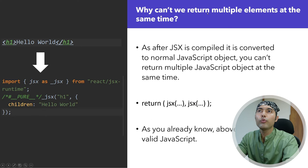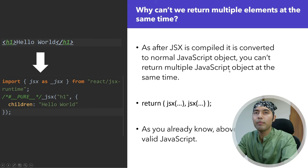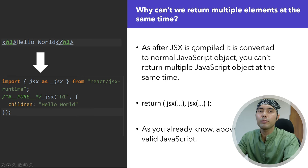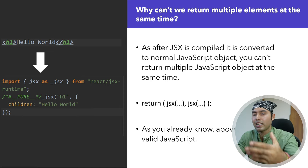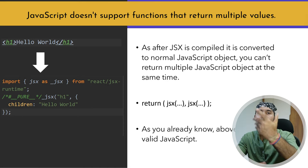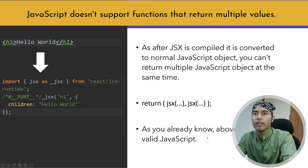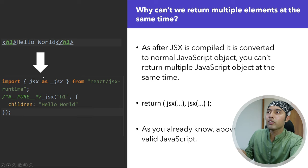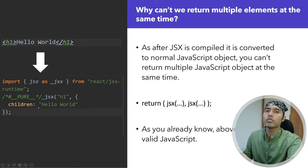Why can't we return multiple elements at the same time? The reason is, when you return JSX, you can't return multiple objects at the same time. You can try it in normal JavaScript — create a function and try to return multiple objects. This is default JavaScript behavior, and this is how it works behind the scenes, which I showed in our JSX video. Babel is the compiler that converts JSX.